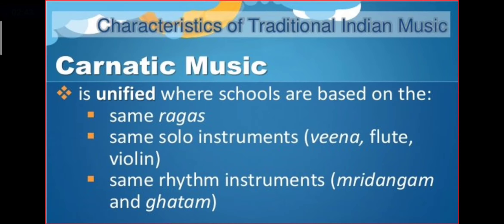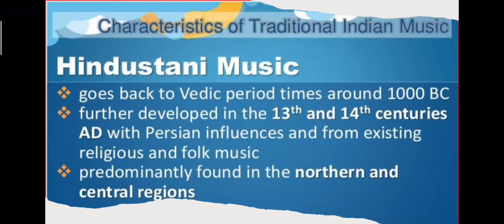Carnatic music is unified where schools are based on the same ragas, the same solo instruments like veena, flute, and violin, and the same rhythm instruments. The other characteristic of traditional Indian music is Hindustani music, which goes back to the Vedic period around 1000 BC, further developed in the 13th and 14th centuries AD with Persian influences.